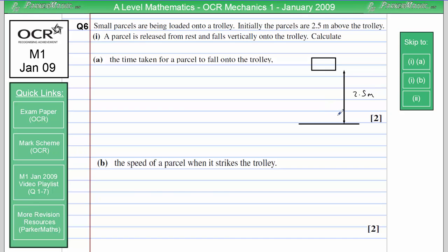And there are no other forces acting on this block other than gravity pulling it down. Therefore, we can write down our values for SUVAT. The displacement is 2.5 metres. Initial velocity is 0 metres per second. We don't yet know V. Acceleration is purely due to gravity, so we can say that that is 9.8 metres per second squared. And we don't know the time.